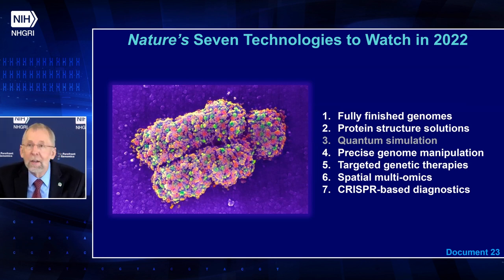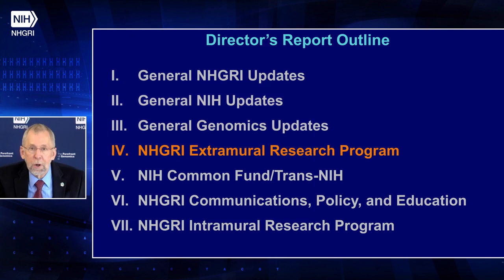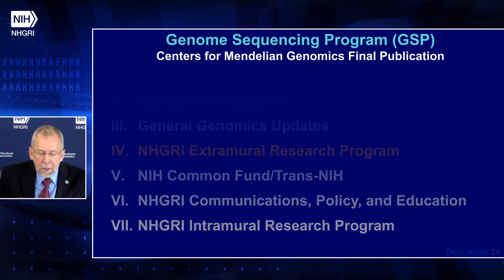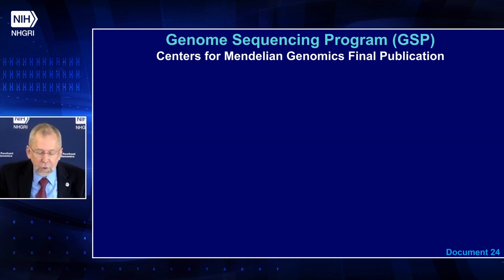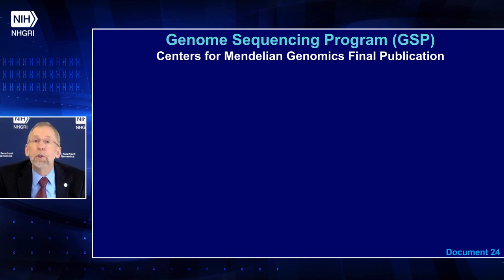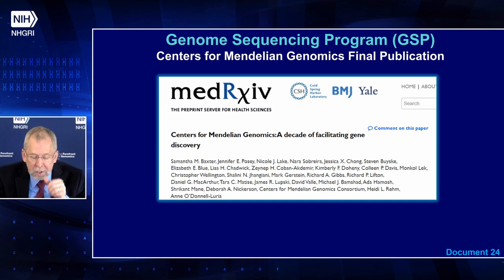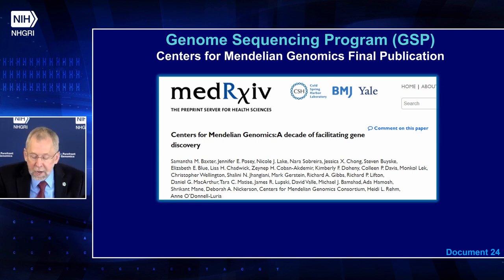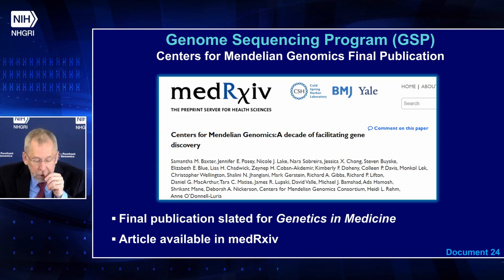Moving on to the NHGRI extramural research program, starting with our genome sequencing program, or GSP: the program has been composed of the Centers for Mendelian Genomics, or CMGs, the Centers for Common Disease Genomics, and GSP Analysis Centers. The program is wrapping up this year and working on final papers, resources, and analyses. As part of these final publications, the CMGs have written a paper entitled 'Centers for Mendelian Genomics: A Decade of Facilitating Gene Discovery,' highlighting key findings from the two phases of the program. The paper is currently in press at Genetics in Medicine and available in medRxiv.